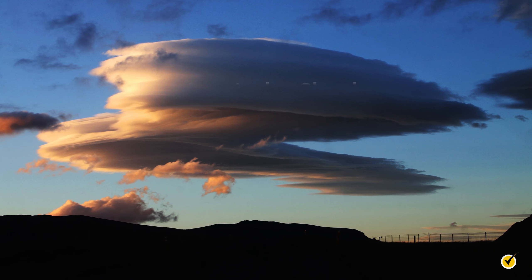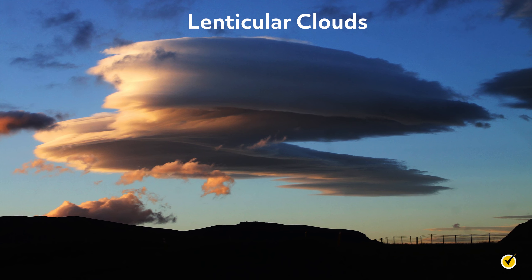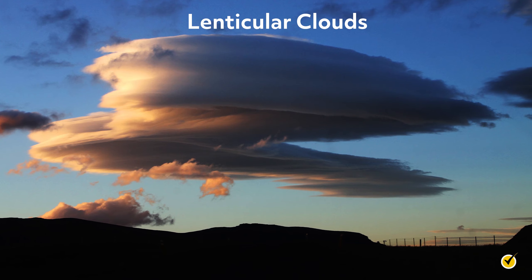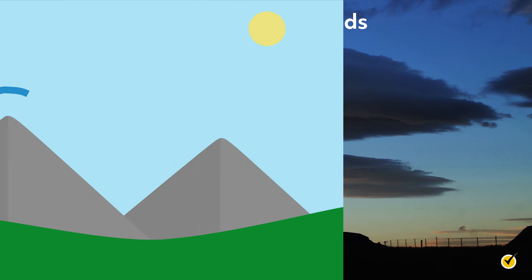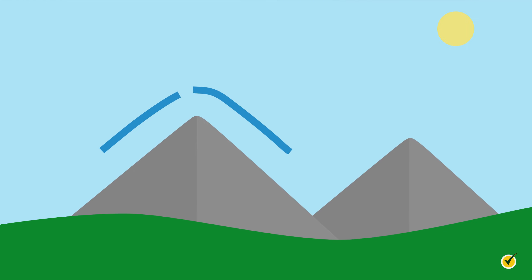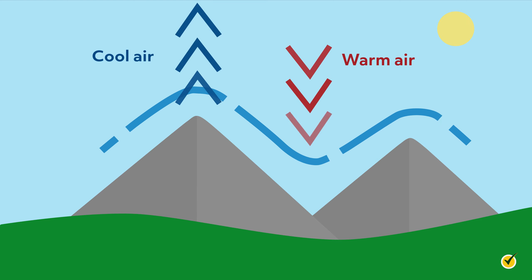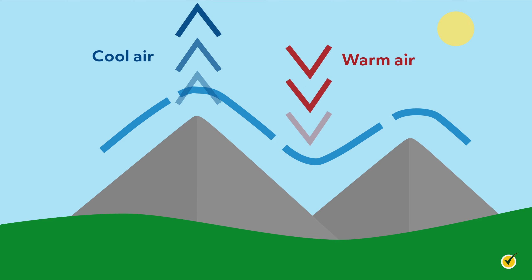Sometimes around mountains, you may see what are called lenticular clouds — they look a bit like flying saucers. Lenticular clouds are formed when air traveling over the mountain flows down the other side, creating a series of oscillating waves. If the conditions are right — the temperature, air blowing in the right direction, etc. — these clouds can form in the trough of the waves.